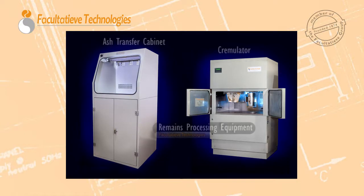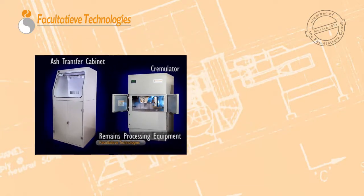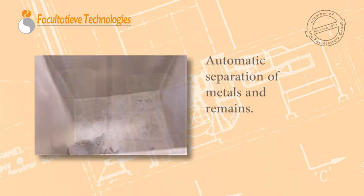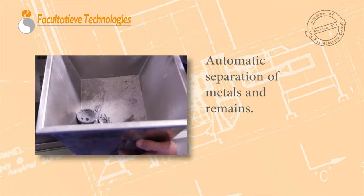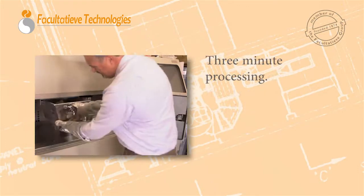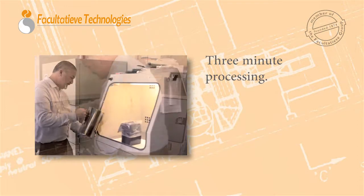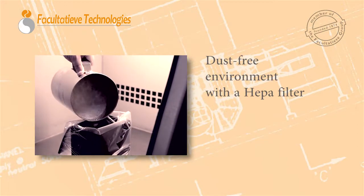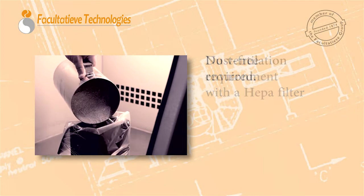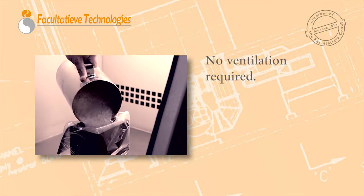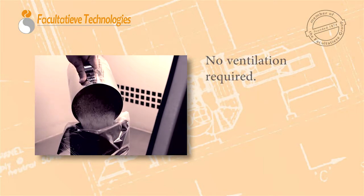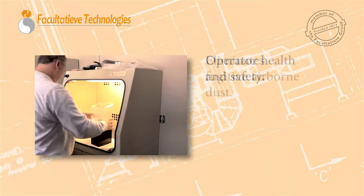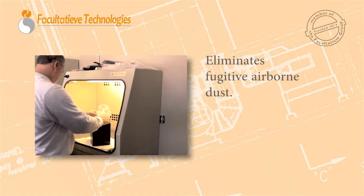Our cremains processing system is utilized to process the remains to a fine granular powder, while automatically separating metals from those remains. Processing is completed within three minutes in a dust-free environment with an onboard HEPA filter which requires no external ventilation. No longer do your operators have to sift through remains to separate the metals and breathe fugitive airborne dust.